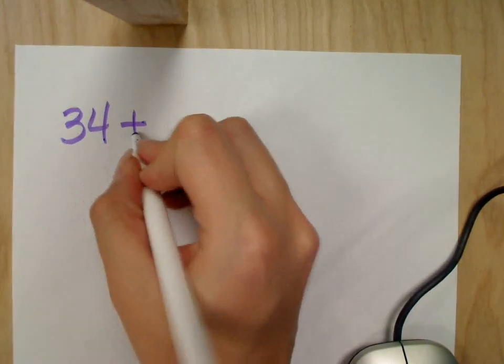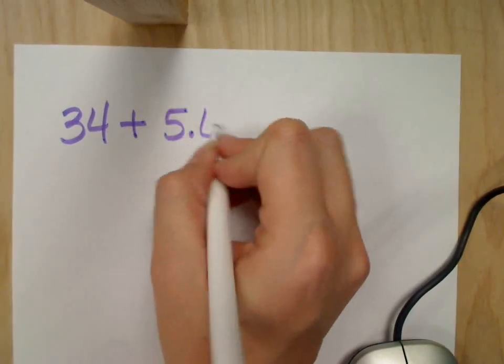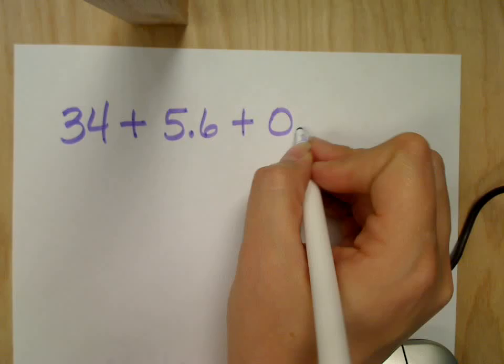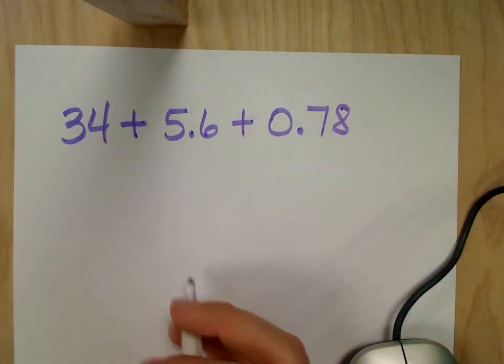You have 34 plus 5 and 6 tenths plus 78 hundredths. So here we go. We've got 34, we have 5 and 6 tenths, and we have 0.78 or 78 hundredths. What's my biggest number of these three numbers?